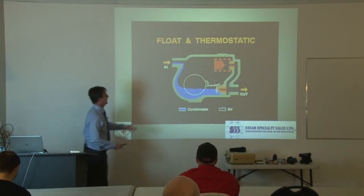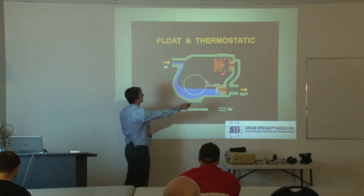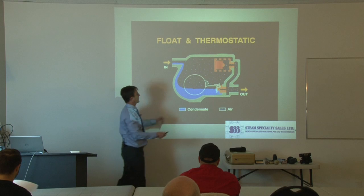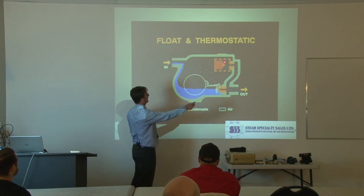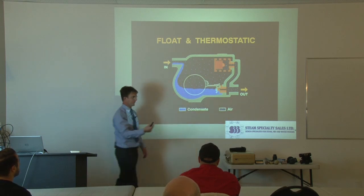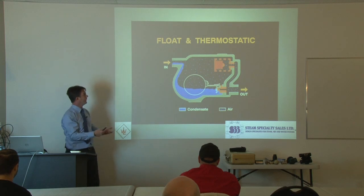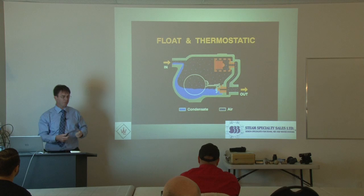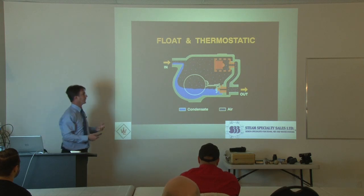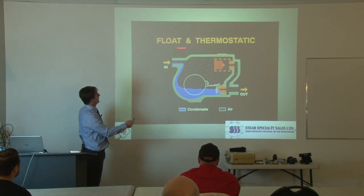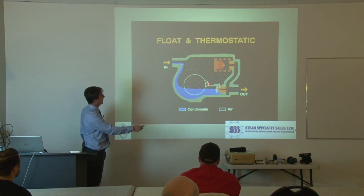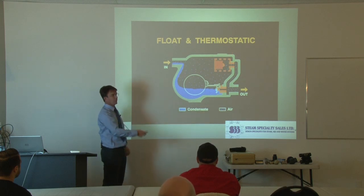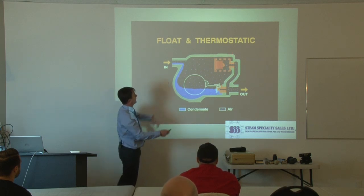The float and thermostatic — this is a bit of an older picture showing a bellows. Modern steam traps won't have that large an air vent; it's now a smaller stainless steel capsule, but the principle is the same — a liquid-filled device that expands or contracts depending on temperature. As the name implies, you have two operating devices: a float, which is the main device that lets condensate out, and a thermostatic element.